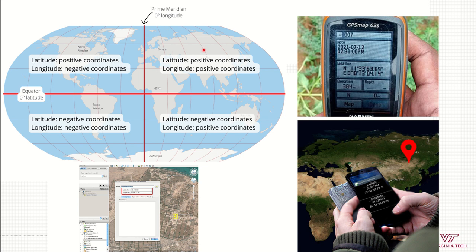Points in the northeast quadrant will have positive coordinates in both latitude and longitude, while coordinates in the southwest quadrant are going to be negative in latitude and negative in longitude — because we use the zero-zero intersection as the benchmark for navigation.